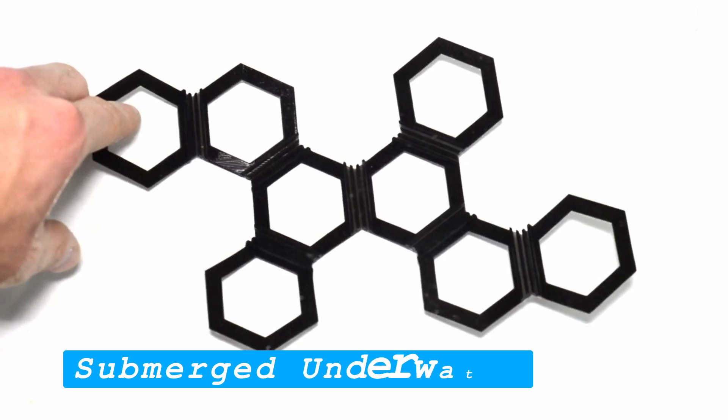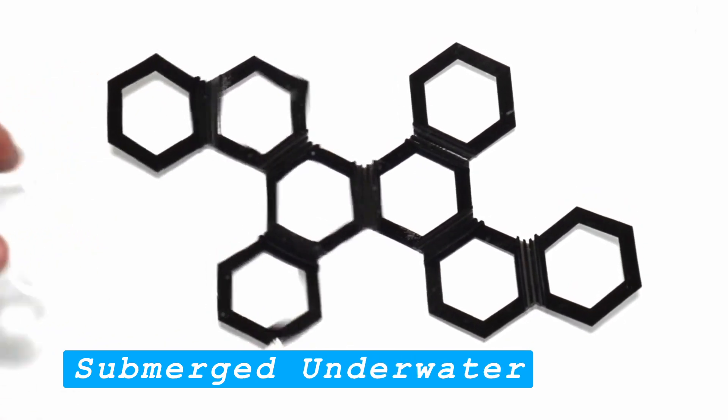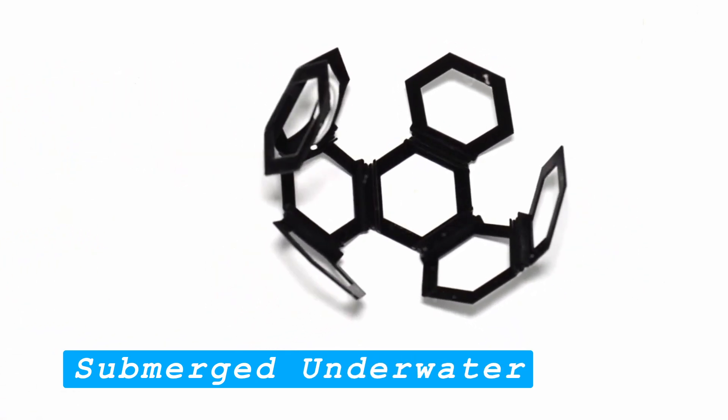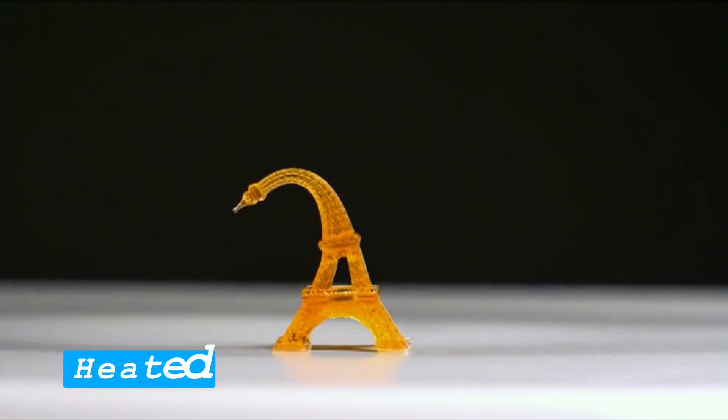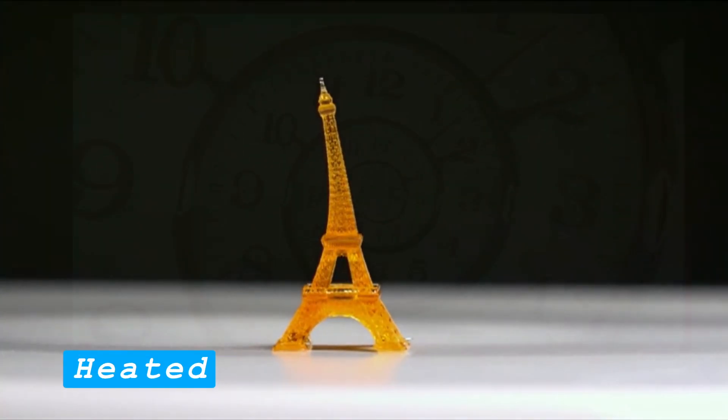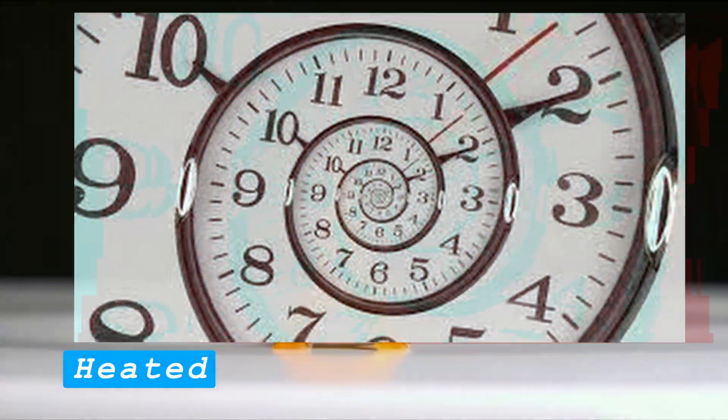What is 4D printing? A 4D printed product is a 3D printed object which can change properties when a specific stimulus is applied. For example, submerged in water, heated, or shaken. The fourth D is therefore time, time needed for the stimulus to be relevant.